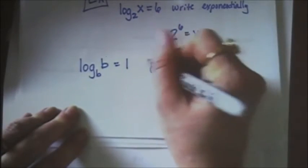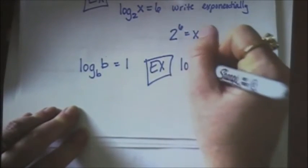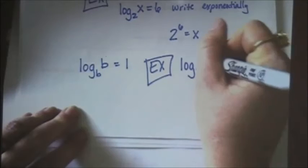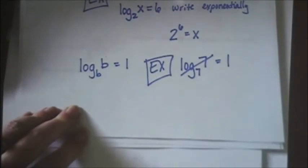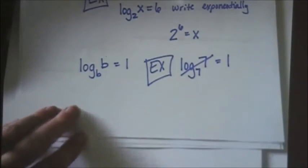So for example, if I have log base 7 of 7, I can cancel that out because it's going to equal 1. And we'll be doing that a lot in the upcoming sections. I think that's pretty much all you need to know for 4.1 and 4.2.